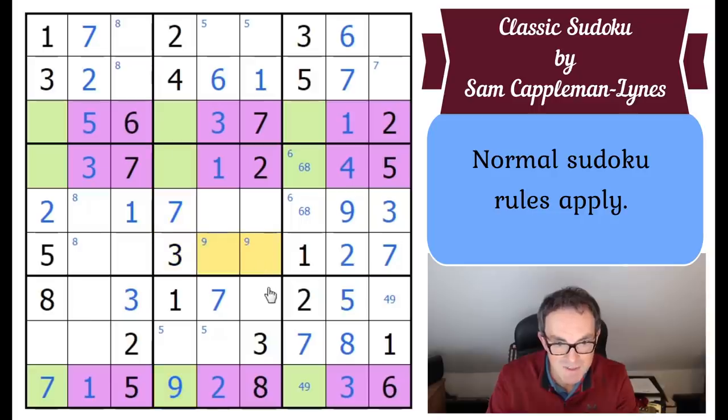Once we go 9 here, we place 9 here. That gives us a 9 here. We're starting to unwind our swordfish. By placing the 4 here, we are unwinding our X-wing. Where does the 4 go in row 3 of the grid now? It can't go in these two squares. So it has to go over there.